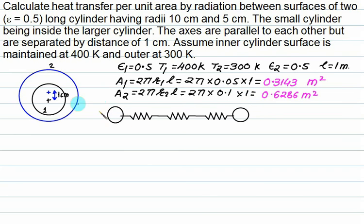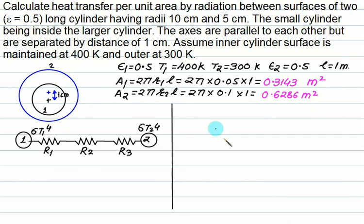We have three resistances between 1 and 2. First is surface resistance that is given by R1. Second is space resistance that is R2. Third is again a surface resistance, R3. This one is sigma T1 to the power 4. This is sigma T2 to the power 4. The resistance R1 is 1 minus epsilon 1 upon epsilon 1 A1. Substitute for epsilon 1 and A1 and obtain the resistance 1. This one is called as surface resistance. This value comes out to be 3.182.